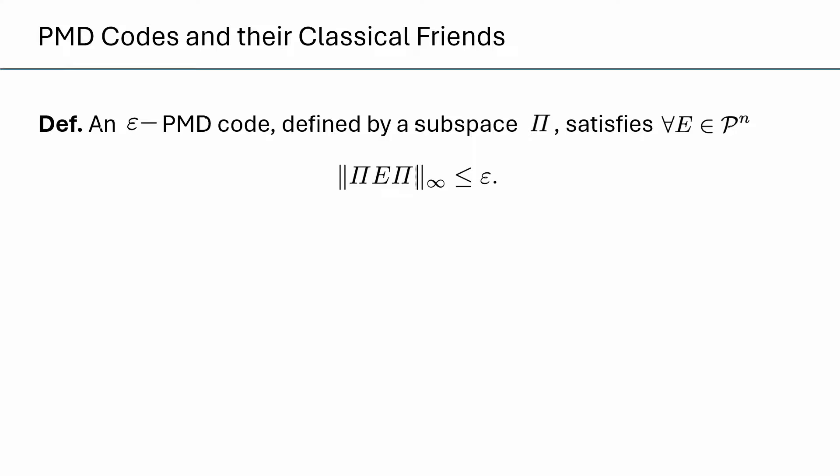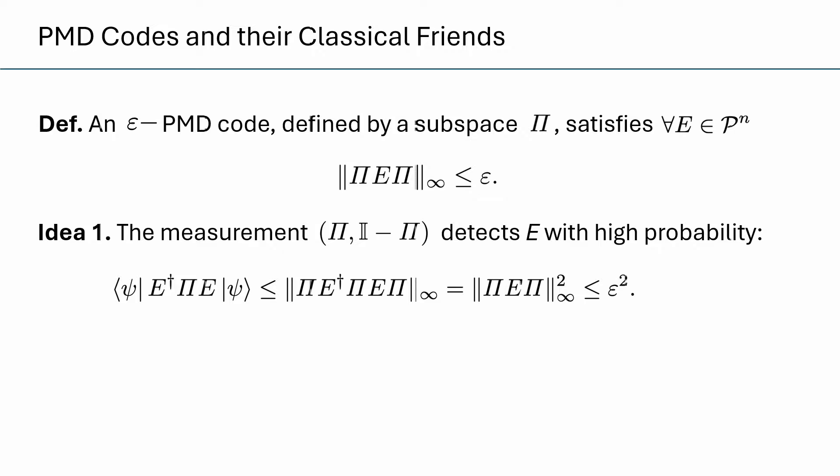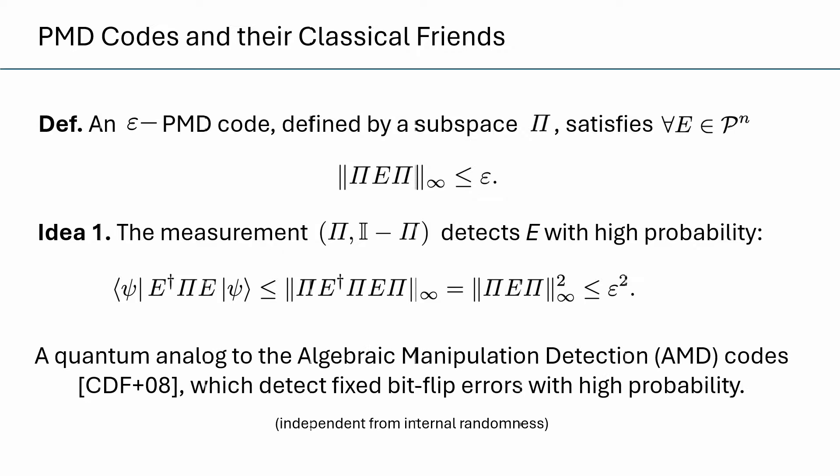Another way to interpret the same statement is that the measurement I defined earlier rejects errors with high probability. In particular, the left-hand side takes a code state psi, tampers with it with an error E, and looks at the probability that the measurement outputs a false positive — what's the odds that we think nothing happened while we actually tampered with the state? Standard manipulations show this is bounded by epsilon squared. To some extent, this is a natural quantum analog to the seminal algebraic manipulation detection codes, or AMD codes, by Cramer, Dodis, and Fehr, which are randomized codes detecting bit flip errors with high probability.